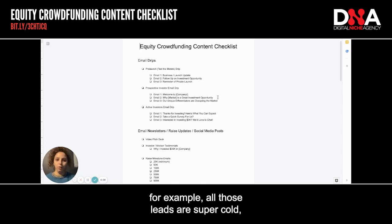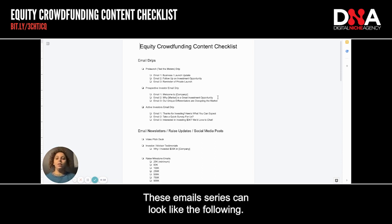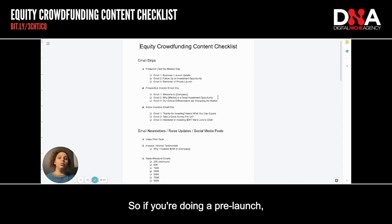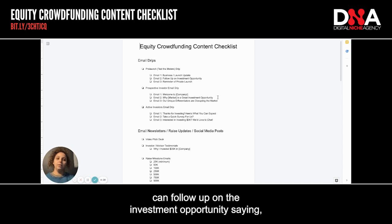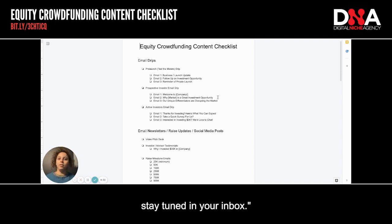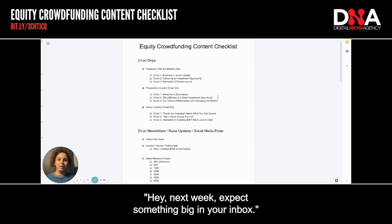All those leads are super cold and brand new. Keeping them warm by sending a series of pieces of information over time is key. If you're doing a pre-launch, I recommend setting up a campaign that gives business and launch updates. The second email can follow up on the investment opportunity saying something big is coming — stay tuned. And on the third email, you can remind them of the private launch once you have a confirmed date, like: next week, expect something big in your inbox. Once you're live, you should run two campaigns.